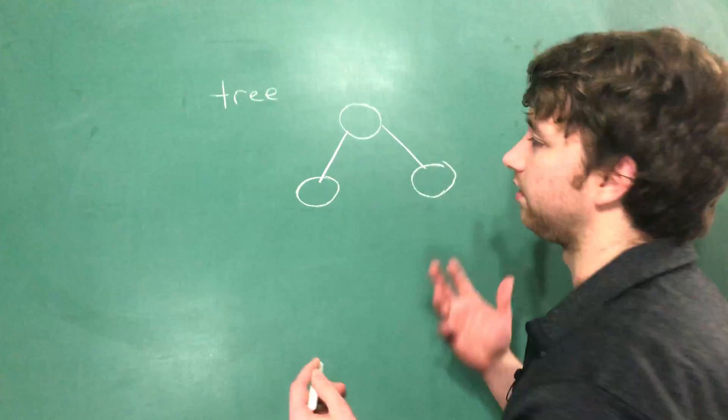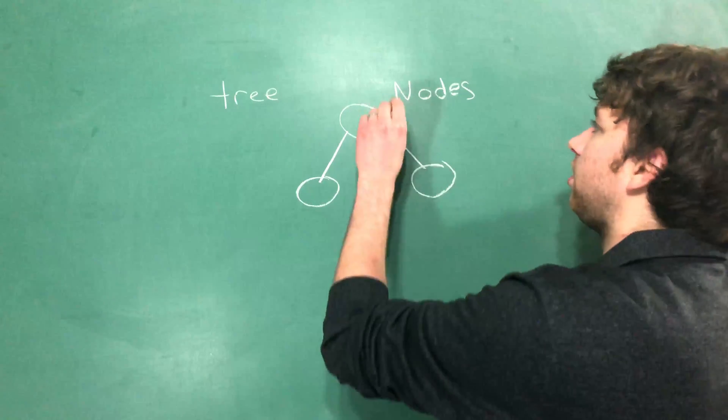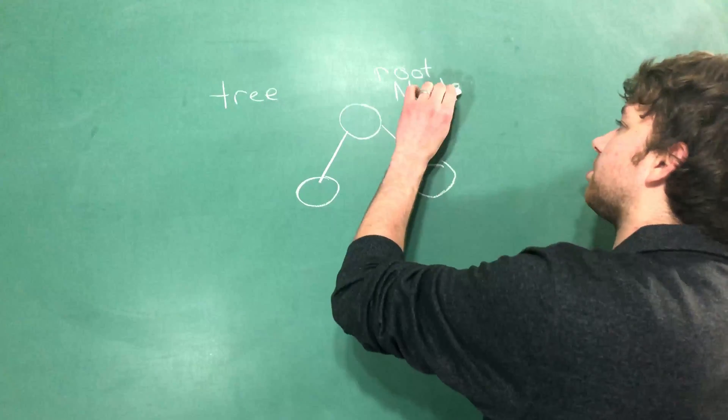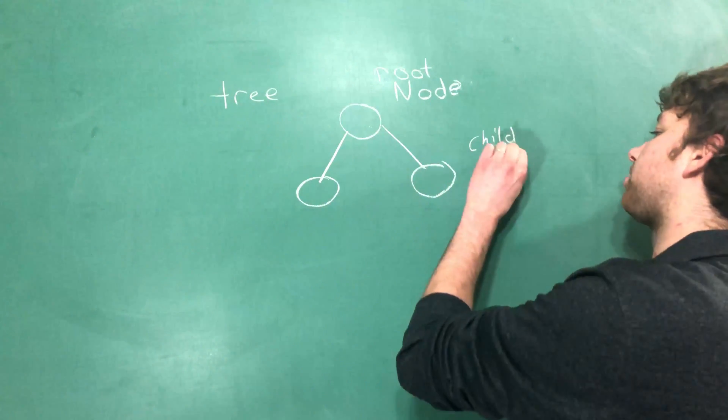The actual technical name for these circles are nodes. You can have what we call the root node, which is the one at the very top, and we call these child nodes. But it's all relative—a child node can also be a parent node.